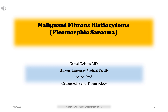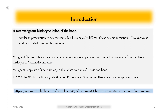Malignant fibrous histiocytoma, pleomorphic sarcoma. Introduction. A rare malignant histiocytic lesion of the bone, similar in presentation to osteosarcoma but histologically different — it lacks osteoid formation. Also known as undifferentiated pleomorphic sarcoma.